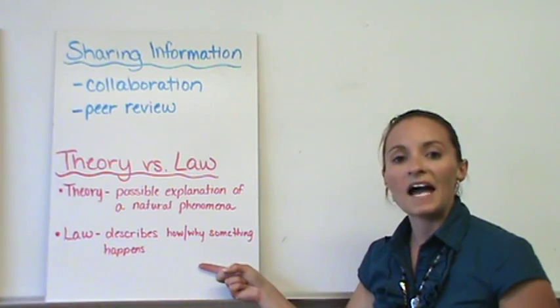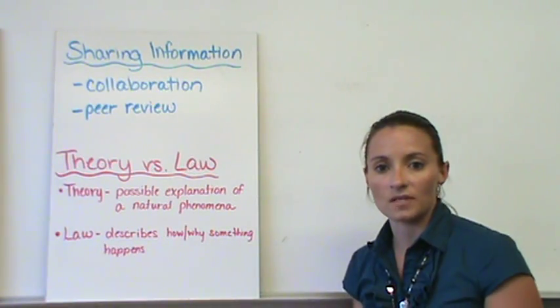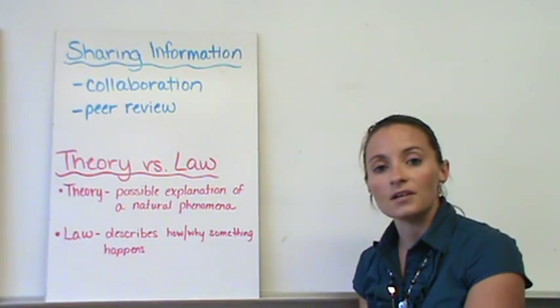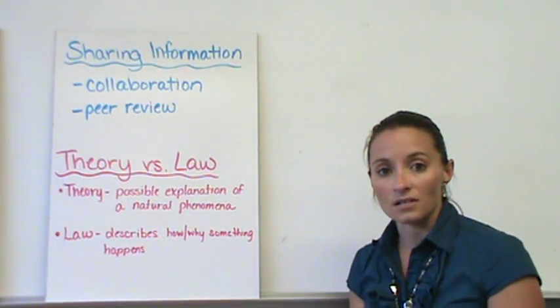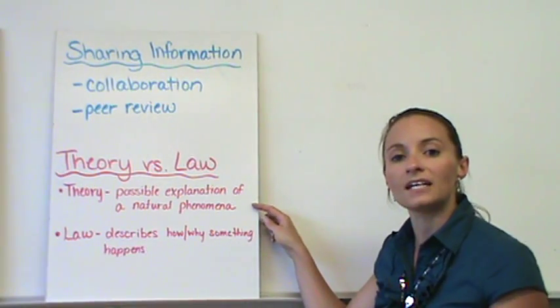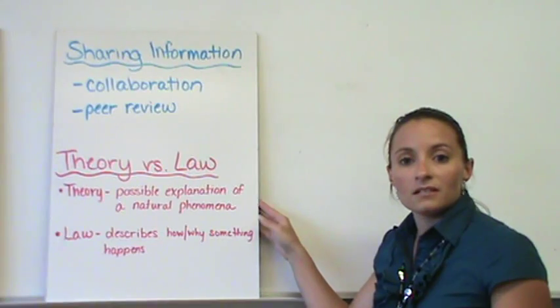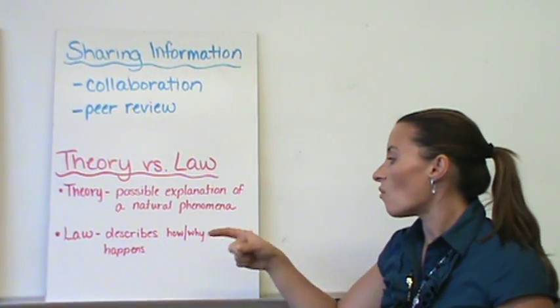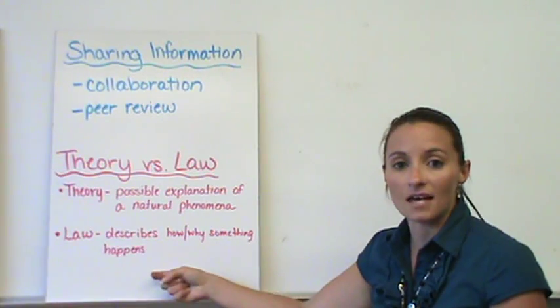So the laws describe how or why actually something happens. It describes why that ball bounces off the wall on the other side of the room when I roll the ball across the room. So a theory tries to explain something in the natural world. And a law actually describes how or why something does happen.